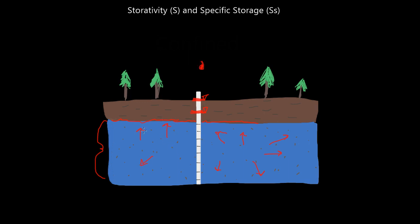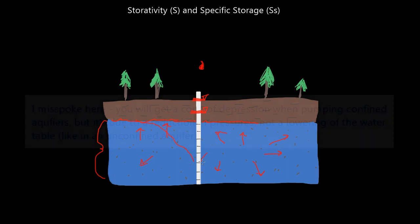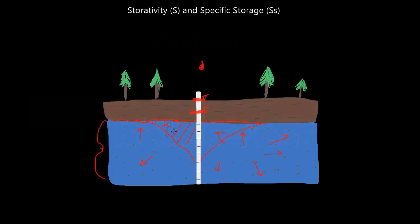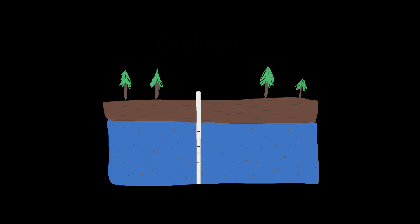This is much different than an unconfined system, where you actually get a cone of depression and you're dewatering the aquifer, removing water by gravity drainage — that's called Specific Yield. Specific Yield in unconfined aquifers and Storativity in unconfined aquifers — I'm going to do another video on that; it will be the next video in this series. Hopefully this made sense. Let me know in the comments if it doesn't, and I'll see you in the next video on Specific Yield and Storativity as it relates to unconfined aquifers.